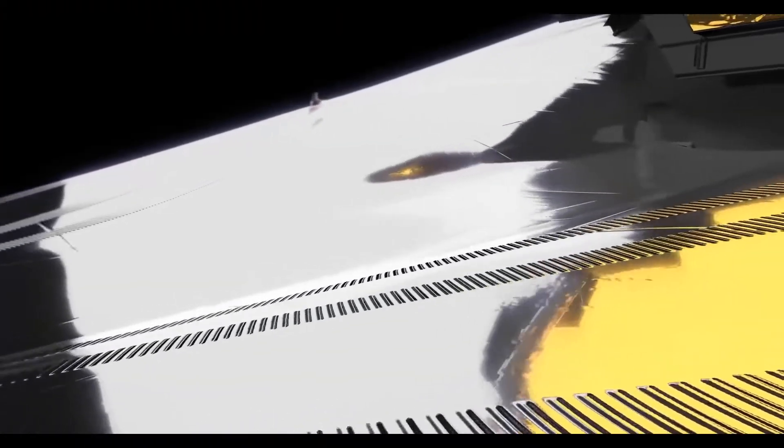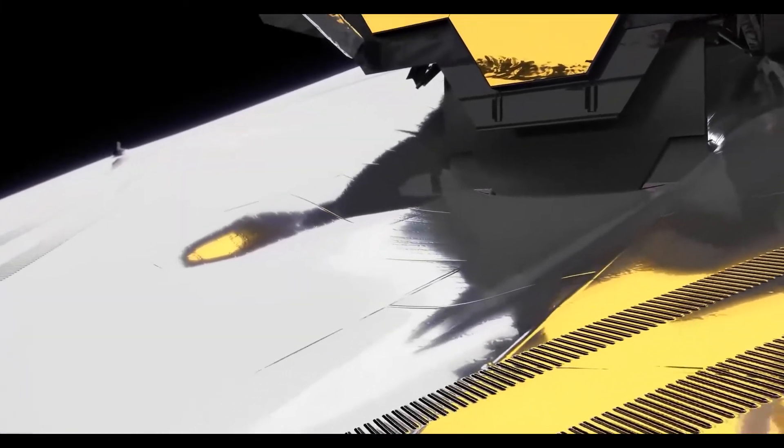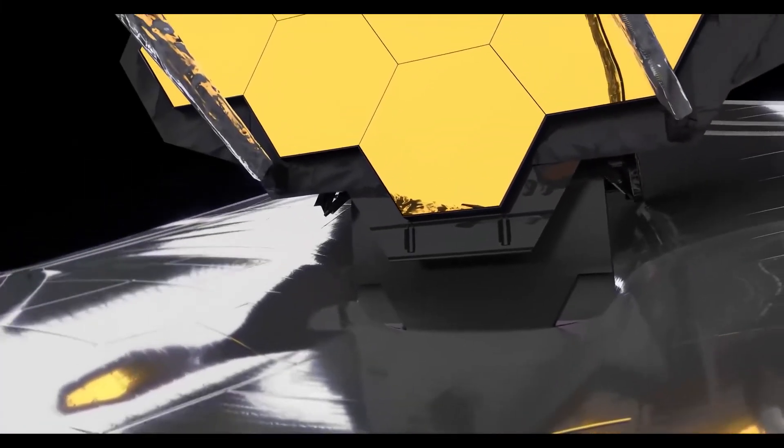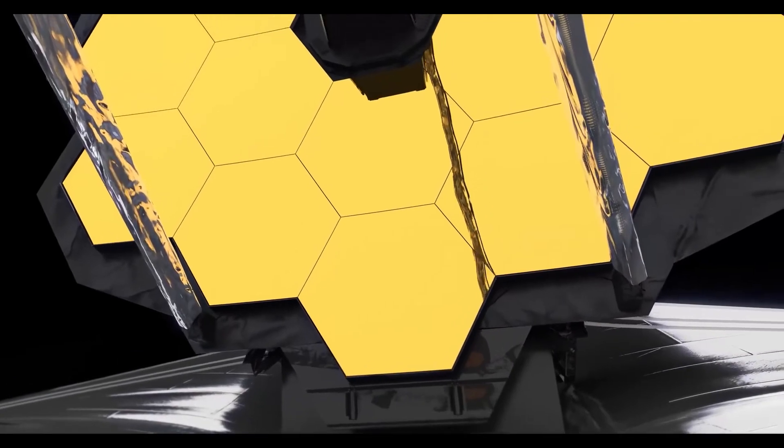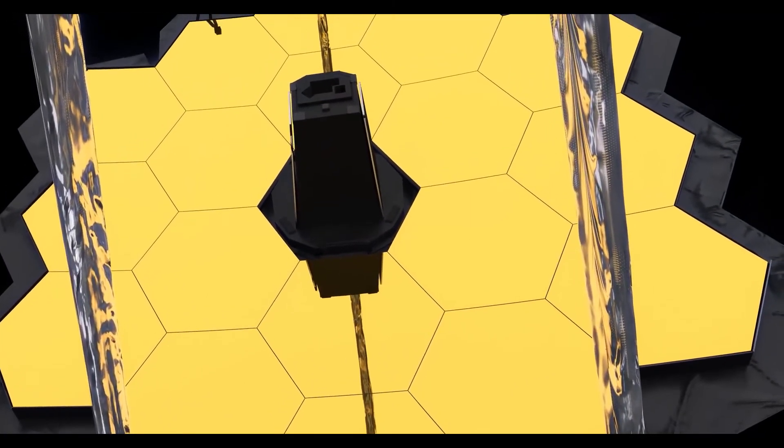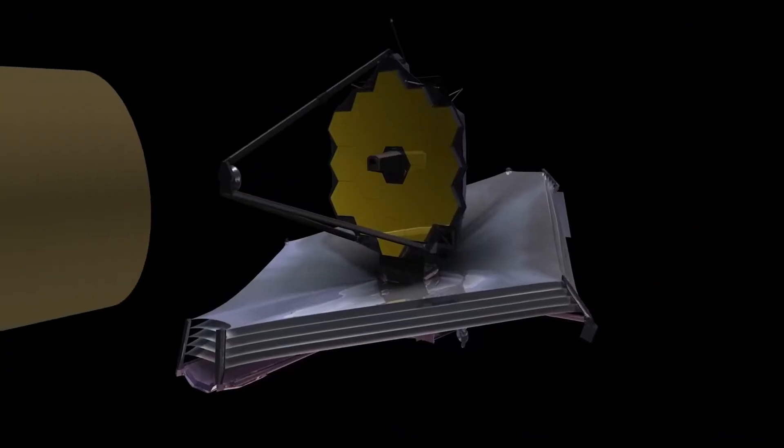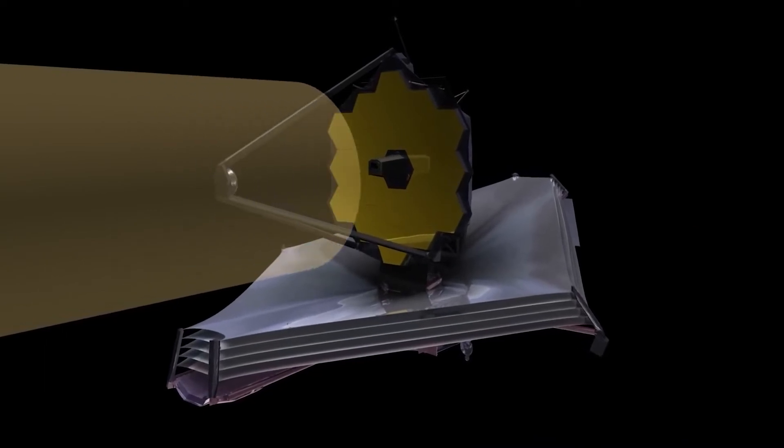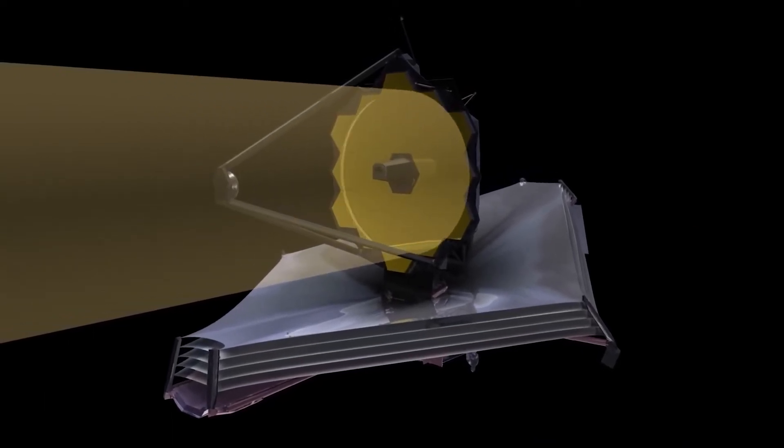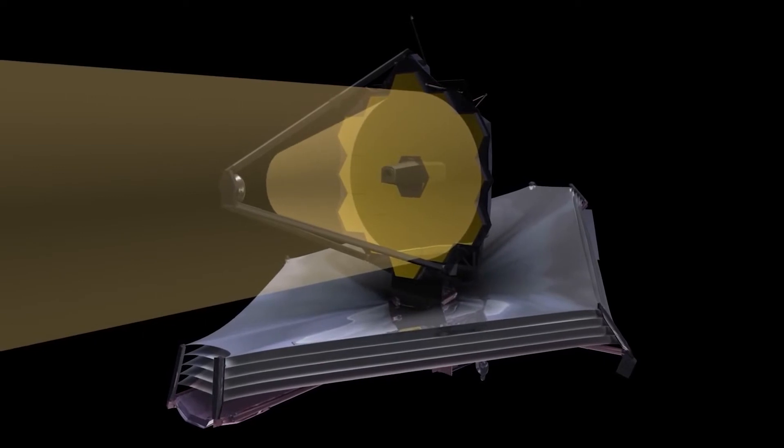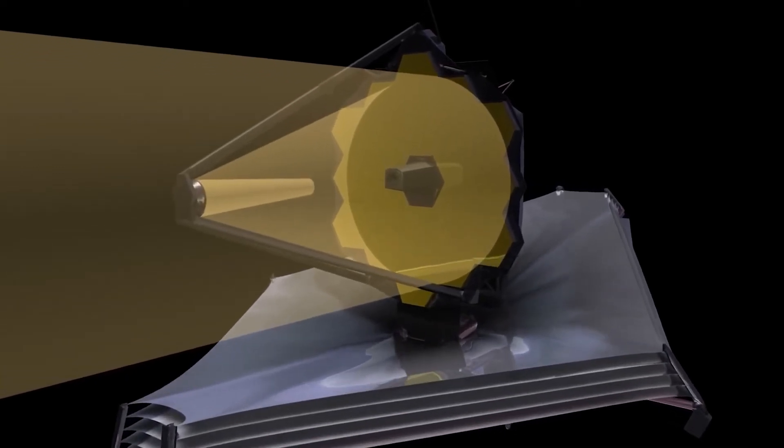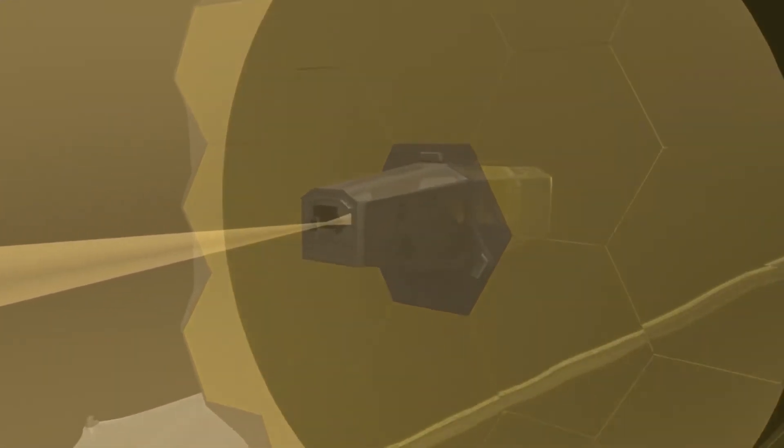After that, the deployable tower assembly was elevated by 1.2 meters to improve thermal isolation and allow the sunshield to unfurl in front and behind it. To produce the initial section of its characteristic 21-meter by 14-meter kite shape, sunshield mid-booms are stretched on either side, dragging the folded sunshield layers.